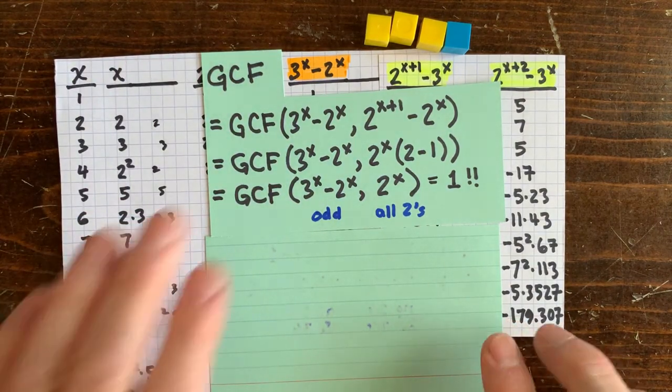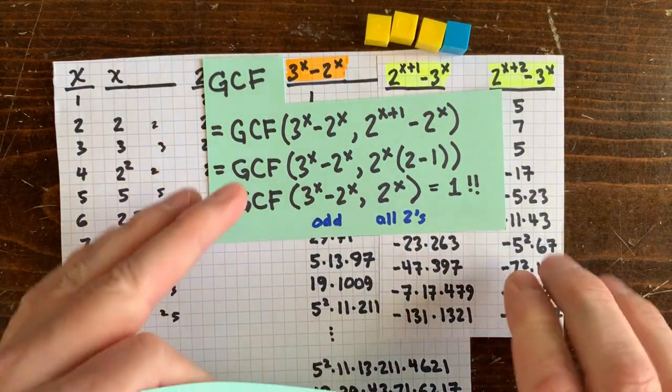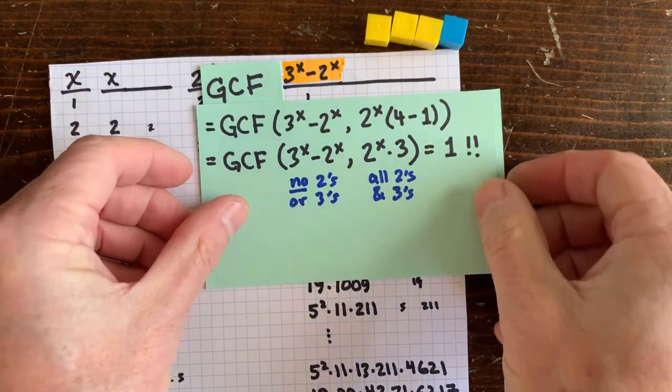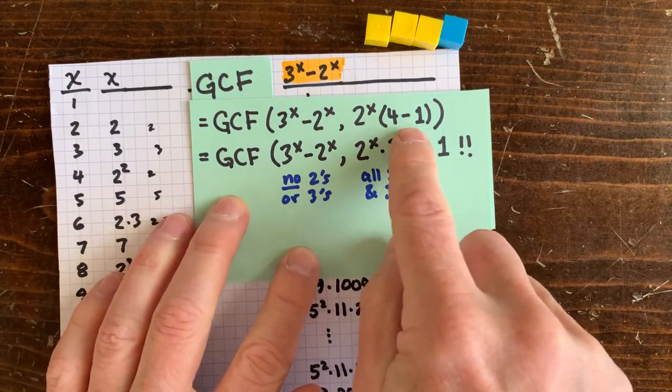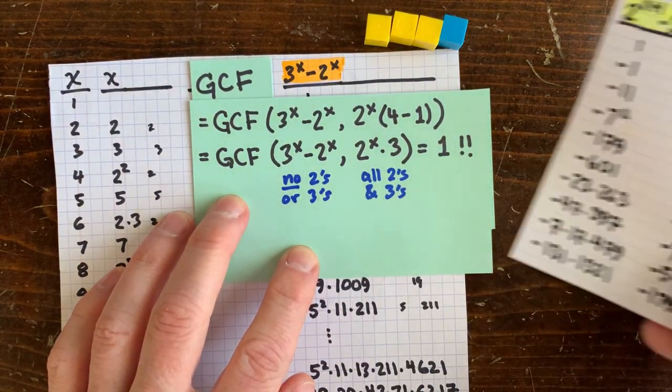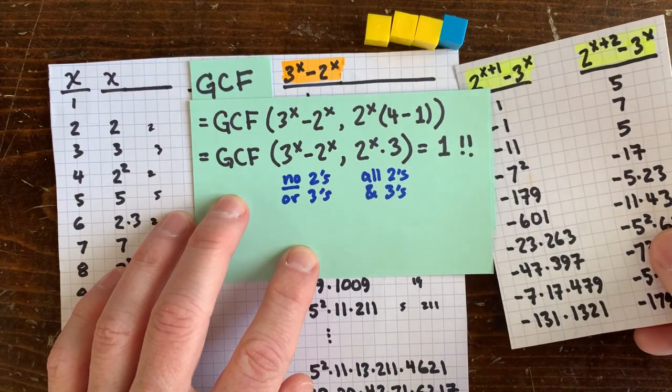How about the second column? It's kind of similar, except we don't have 2 minus 1 here. We have 4 minus 1 here. But again, the first term isn't divisible by 2 or 3. And the second term is only divisible by 2 or 3. So also co-prime.